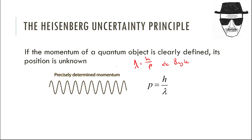If something had a perfectly defined momentum - like I say this thing has a momentum of six or whatever - that would give me a nice, beautiful wave with a beautiful wavelength. It would look like a nice sine wave. The wavelength is easy - just measure the distance between the peaks and it's the same everywhere. That would be like a constant, always the same wavelength, a nice classic sine wave.